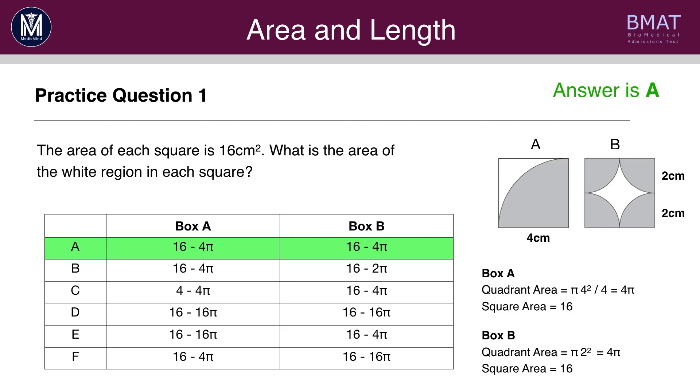Now let's look at box B. In box B, we have many quadrants again, and in this case, we have 4 quadrants rather than 1. There are 4 quadrants, and each quadrant has a radius of 2 centimetres. If there are 4 quadrants, they add up to form one full circle.